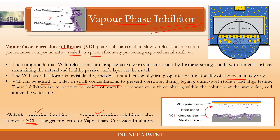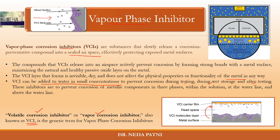As you can see in this figure, VCI is present in all three phases — within the solution, at the water line, and in the vapor space. You may recall that waterline corrosion occurs just at the water line: just below it, the metal has less access to oxygen, so it becomes the anode and corrodes. The area with access to oxygen becomes the cathode. VCI covers that space too, so waterline corrosion does not take place — it protects the metal in all three phases.